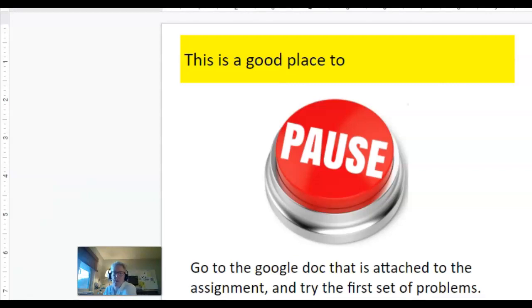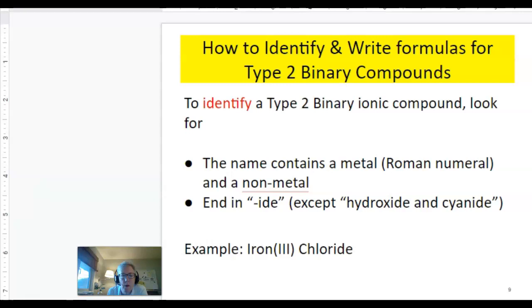We're back, and I'm hoping that you were able to do the first part of those problems on your Google Doc for naming ionic compounds with transition metals. So now we're going to go in the other direction. Instead of coming up with the name, we're going to take the name and come up with the formula. When you're going to write a formula for a type 2 binary compound, the first thing to realize is whether you actually have a type 2 binary compound. So you need to identify it.